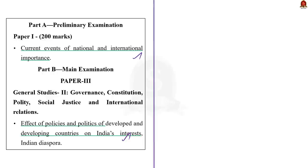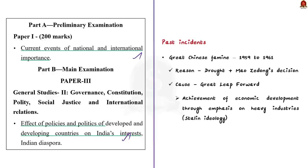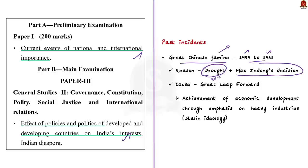Let us begin with some history. In the past, there has been a decline in the population of China. It was during the Great Famine between 1959 and 1961. Famine — drought also contributed to the Great Chinese Famine of 1961. But the main reason was Mao Zedong's decision. Interested aspirants, comment who is Mao Zedong and what is his contribution to China in the comment section.